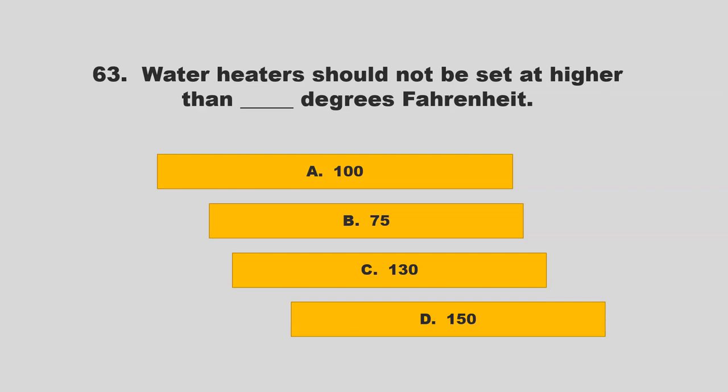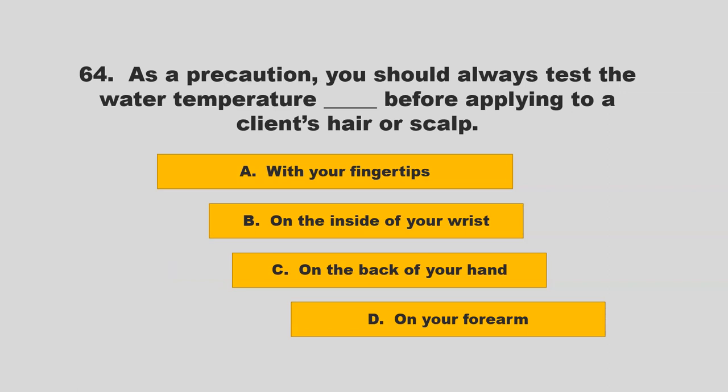Water heaters should not be set at higher than blank degrees Fahrenheit. Options: 100, 75, 130, or 150. The correct answer is C: 130 degrees Fahrenheit.